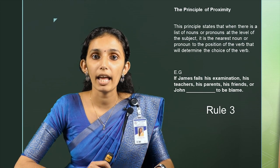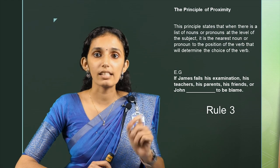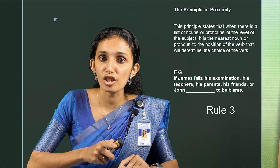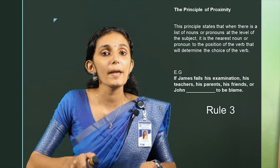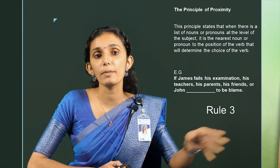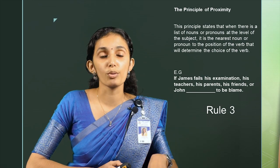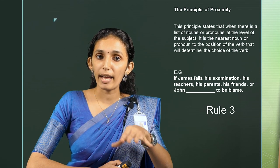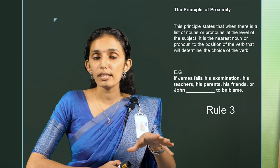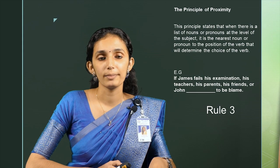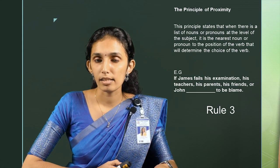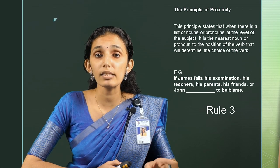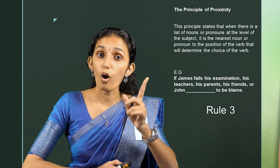The correct option to fill that blank space is 'is' and not 'are,' because at the subject level we have his teachers, his friends, his parents, and John — four different people. In order to choose the correct verb, we choose the nearest subject to the gap, which is John. What makes us consider only one noun or pronoun is because of the use of OR.